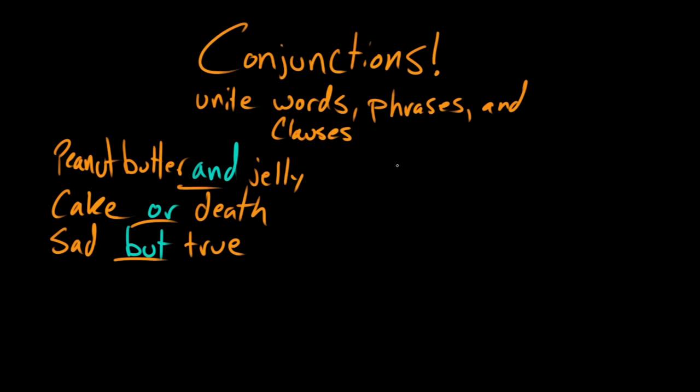But what I'm going to talk about today is a mnemonic or a memory aid called Fanboys. And this is how we remember the coordinating conjunctions. And you don't need to worry about the name coordinating conjunctions, we'll get to that later. For now, just remember Fanboys. For, and, nor, but, or, yet, and so. Fanboys.